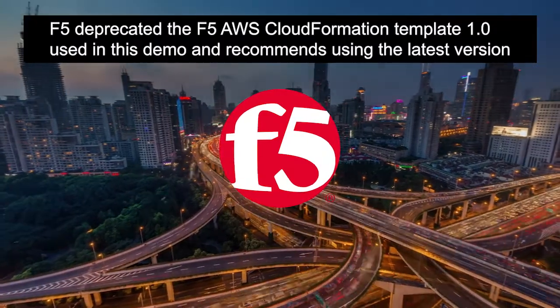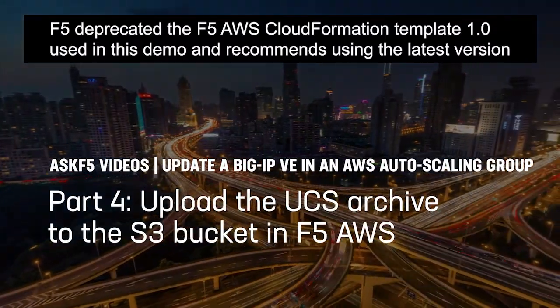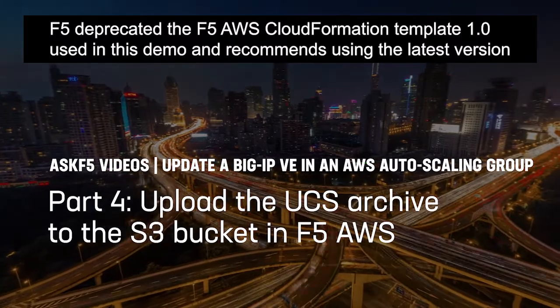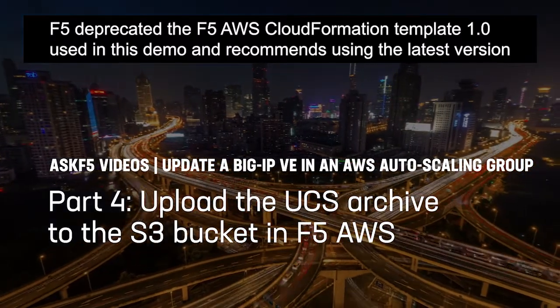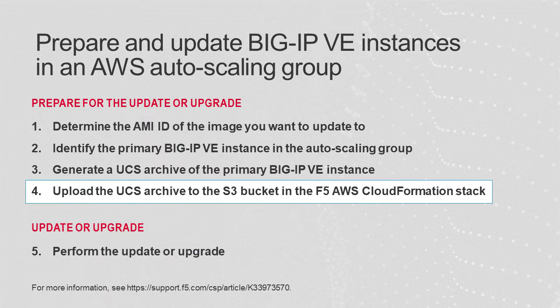Hello everyone. Today F5 shows you how to upload the UCS archive to the S3 bucket in the F5 AWS CloudFormation stack. You must complete five steps to prepare and then update or upgrade a Big-IP Virtual Edition or VE instance in an Amazon Web Services or AWS Autoscaling group. This demonstration covers step four.